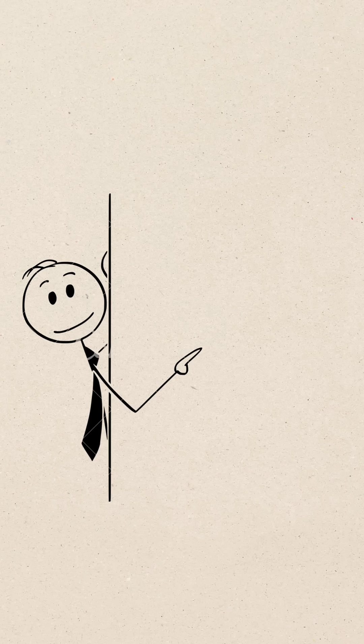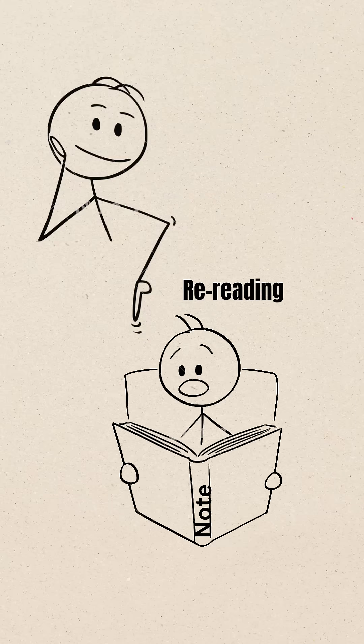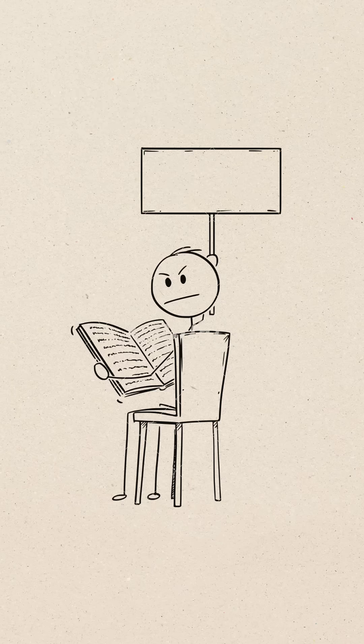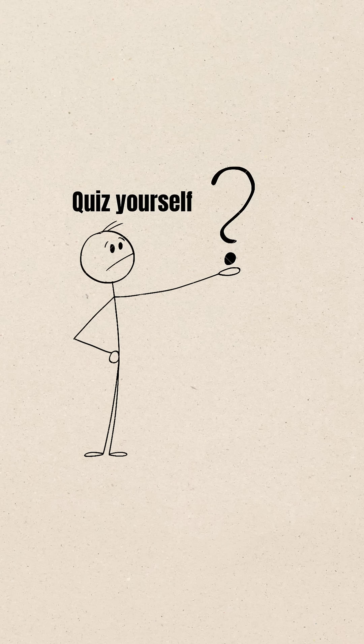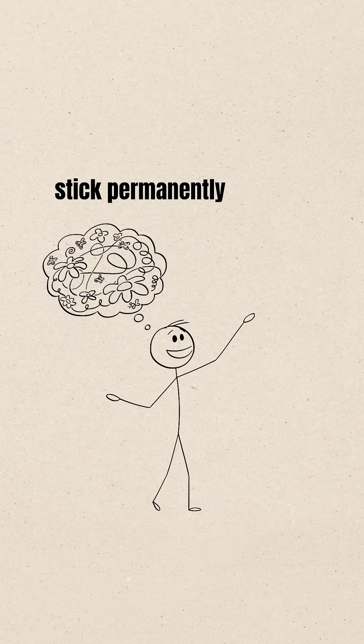Trick number two: Active recall. Most people think re-reading notes helps them remember, but here's the truth. Reading passively doesn't work. Instead, close your book and quiz yourself on what you just learned. This forces your brain to retrieve information, making it stick permanently.